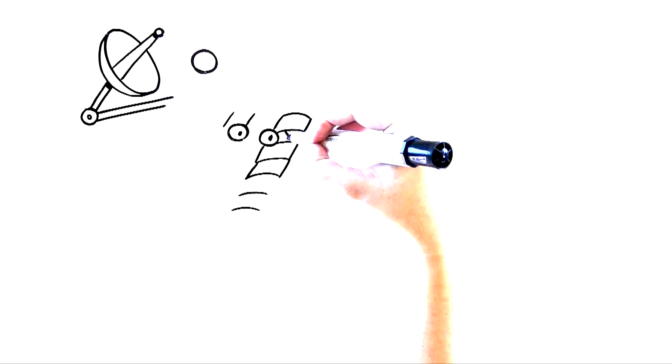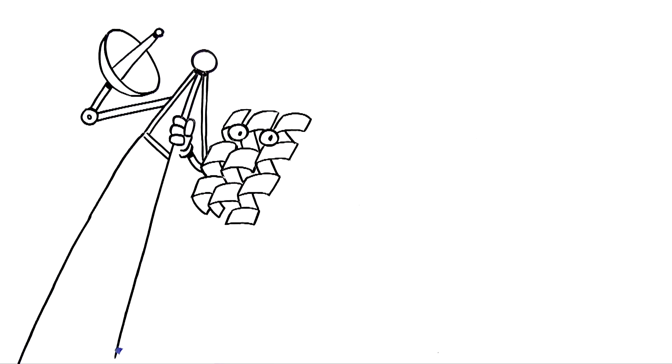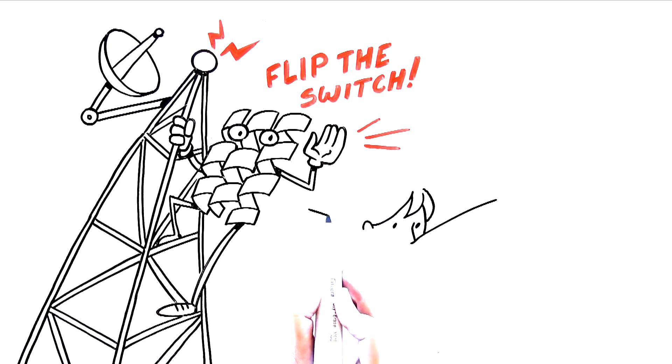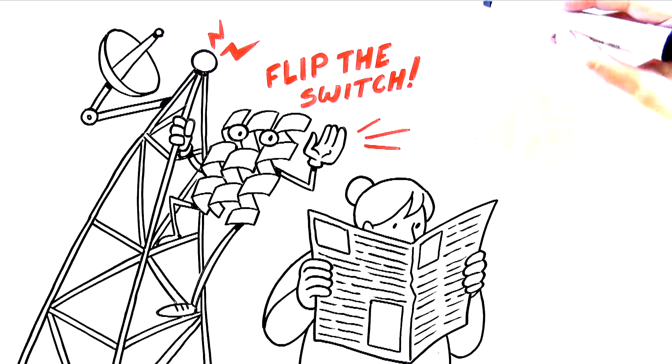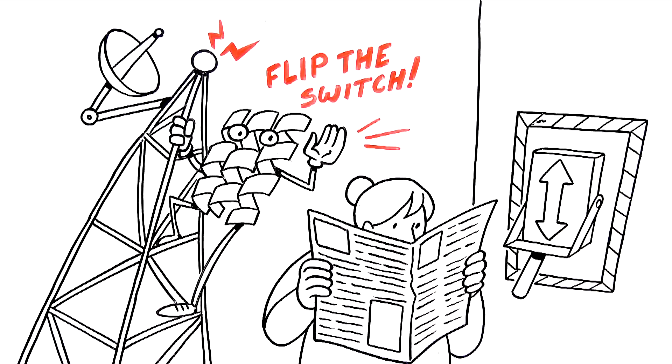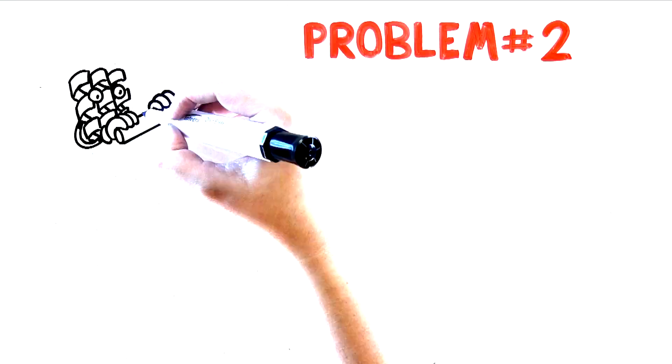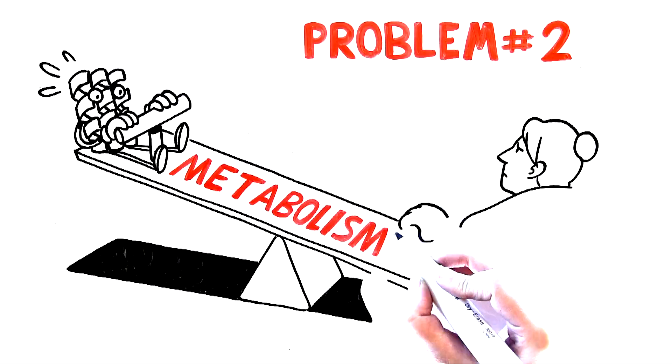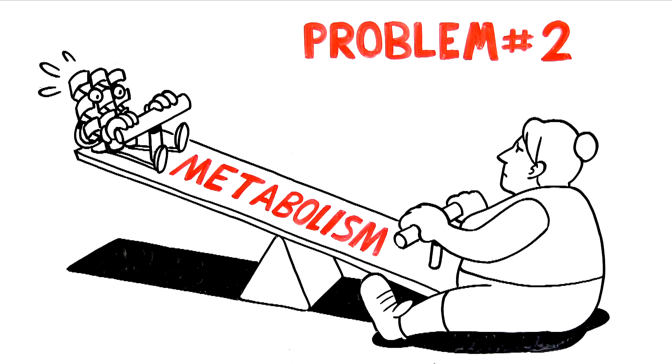So, to quickly recap, unique problem number one you face when trying to lose weight is your resistance or insensitivity to leptin's signal to burn fat, which is basically like having your body's fat burning switch set to off. And unique problem number two you face is the rapid drop in your leptin levels when you diet, which slows down your metabolism substantially and leads to frustrating weight loss plateaus and massive rebound weight gain. Not fun.